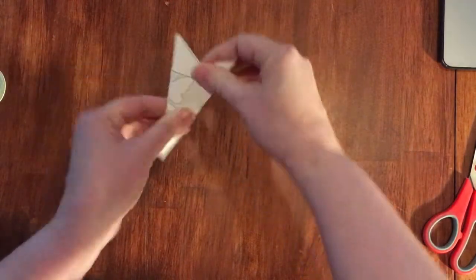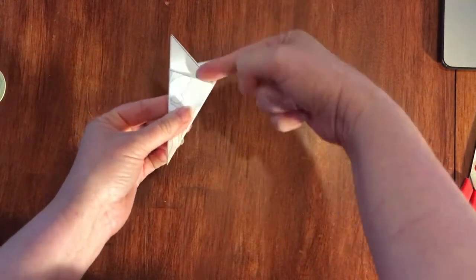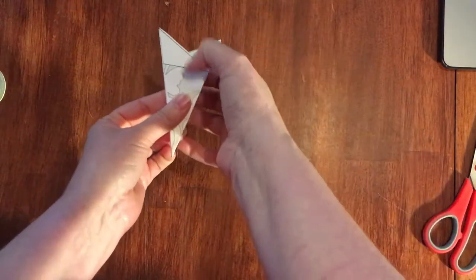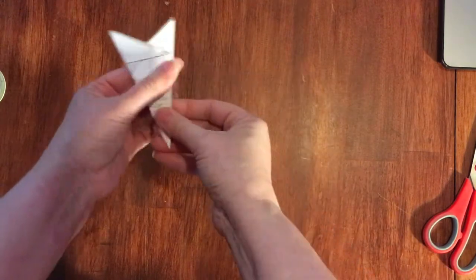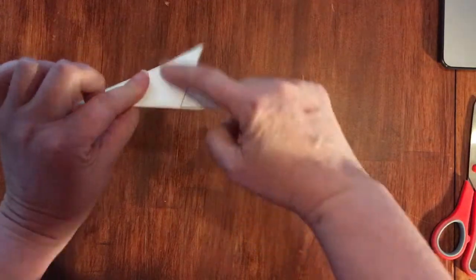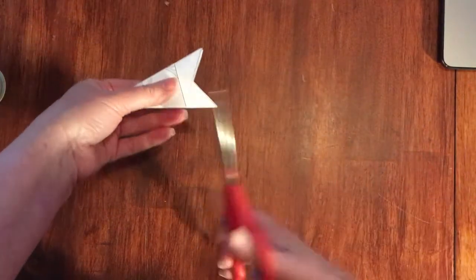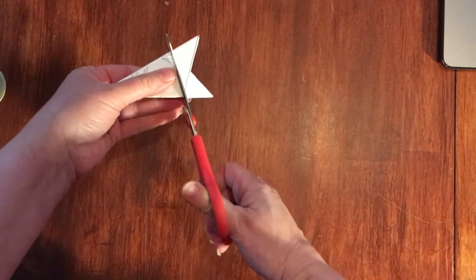Turn your snowflake so that you have the horizontal line and the paper. This one we can see the print is the front, but if you're folding a blank one, you'll look for that horizontal line. You're going to cut along the horizontal line.